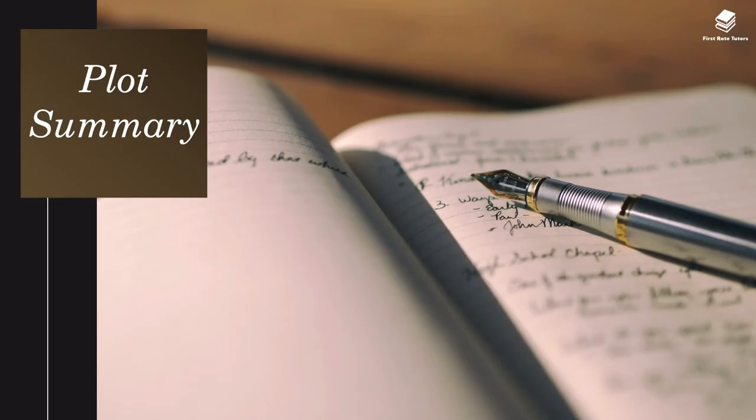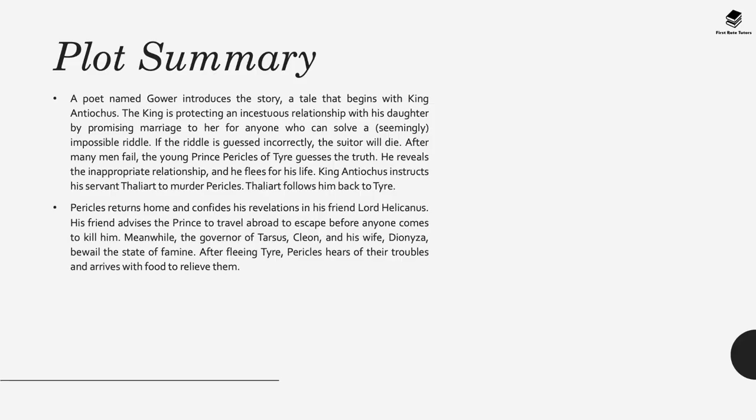In the plot of Pericles, a poet named Gower introduces the story, which begins with King Antiochus. The king is protecting an incestuous relationship with his daughter by promising her in marriage to anyone who can solve a seemingly impossible riddle. If the riddle is guessed correctly, the suitor will die. After many men fail, the young Prince Pericles of Tyre guesses the truth, reveals the inappropriate relationship, and flees for his life. King Antiochus instructs his servant Thaliart to murder Pericles.